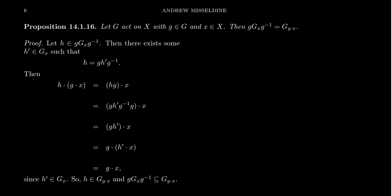Before we end this video, there's one very important property about isotropy subgroups. It has to do with taking conjugates of isotropy subgroups. Given a group action of G on X, take a fixed element g of the group and a fixed element x of the G set X. We want to prove the following identity: the conjugate subgroup g·G_x·g⁻¹ equals the stabilizer of g·x. Stabilizers are always subgroups, and the conjugate of a subgroup is also a subgroup. To prove equality of sets, we show each side is a subset of the other.